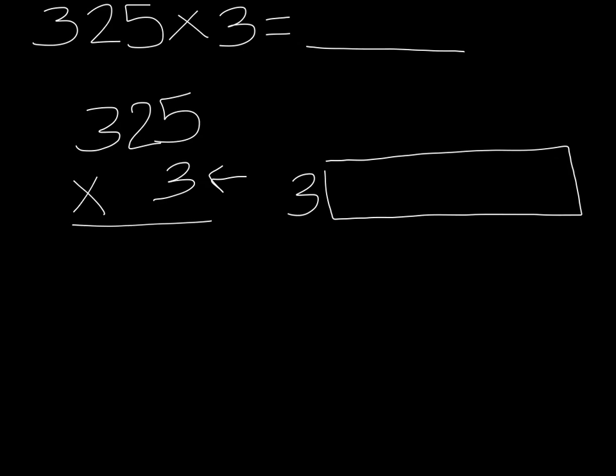The next step is we need to take our three-digit number, which is 325, and we need to separate it out by place value by looking at the value of each digit. So we begin by looking at the 3. What is the value of the 3? I bet you said 300. Good job. So we write 300. Then we break apart our tape diagram.